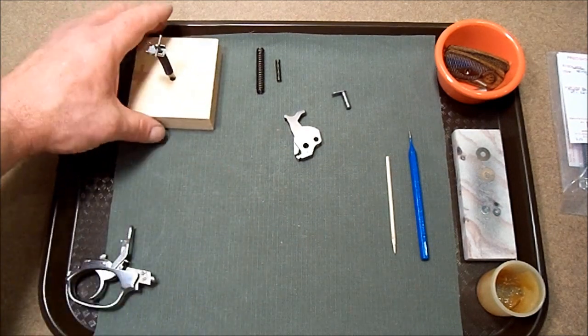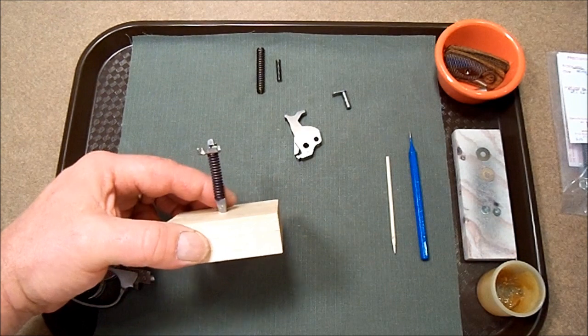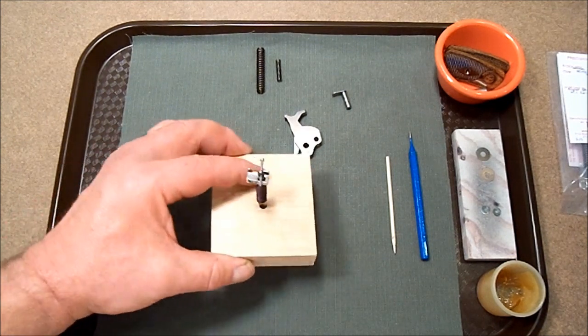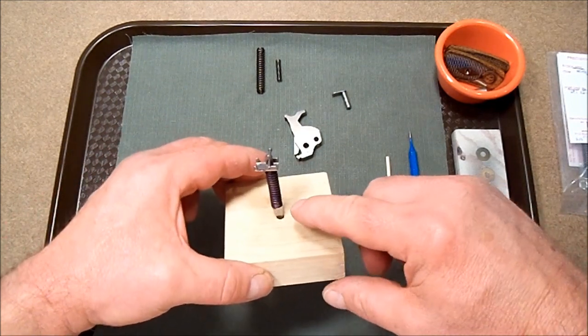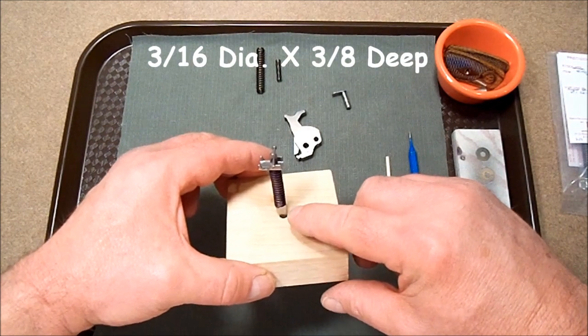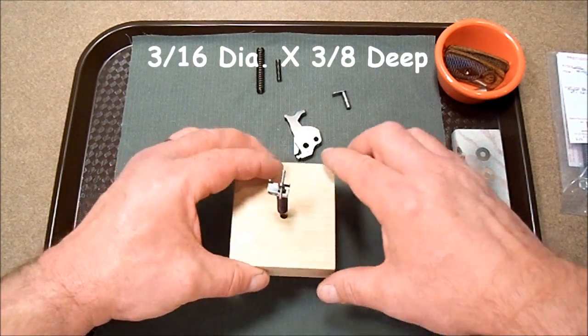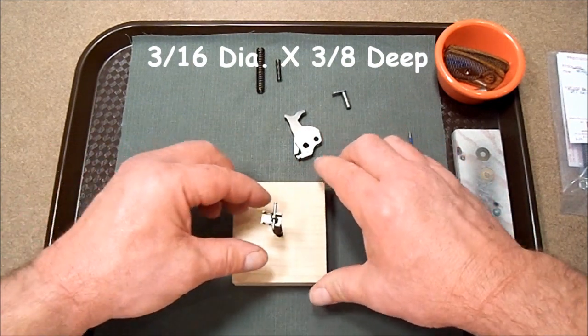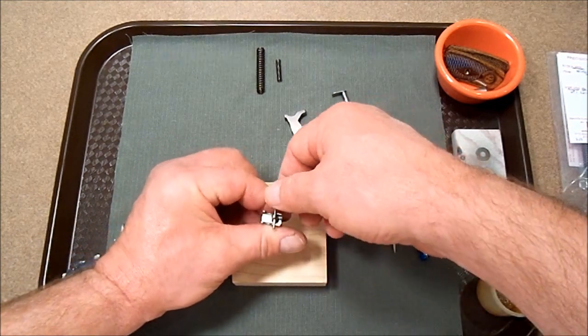We're going to start with the main spring and replace that with a Wolf Reduced Power Spring. Now I've got a block of wood. I've drilled a 3/16ths by 3/8ths deep hole. We're going to use that to hold the strut while I replace the main spring.